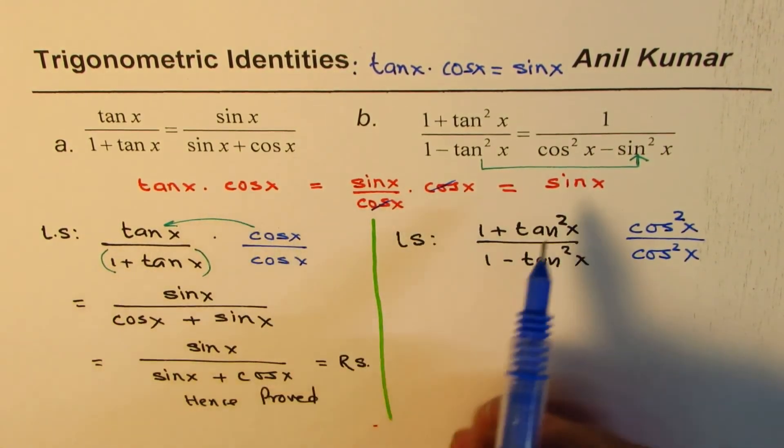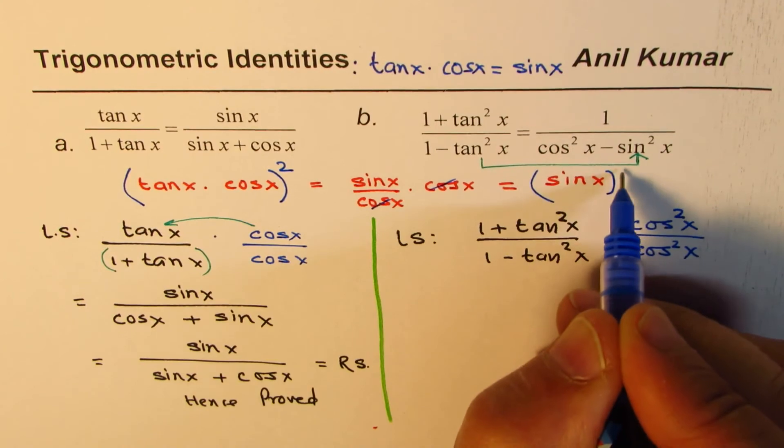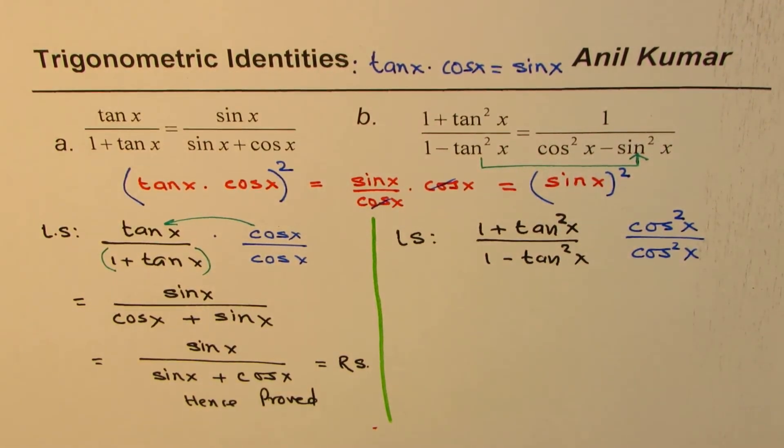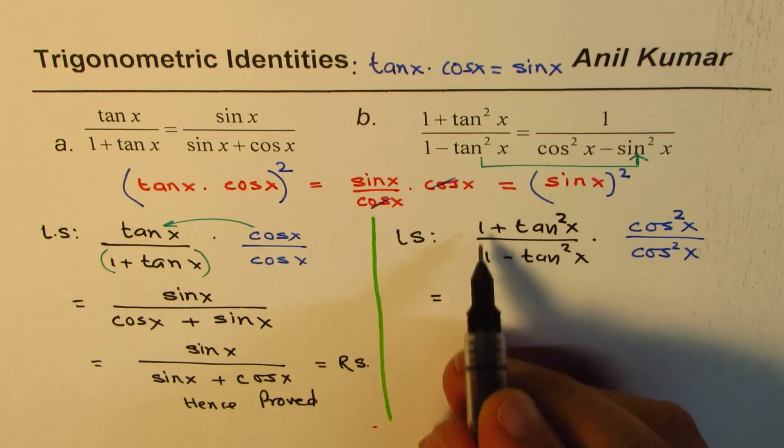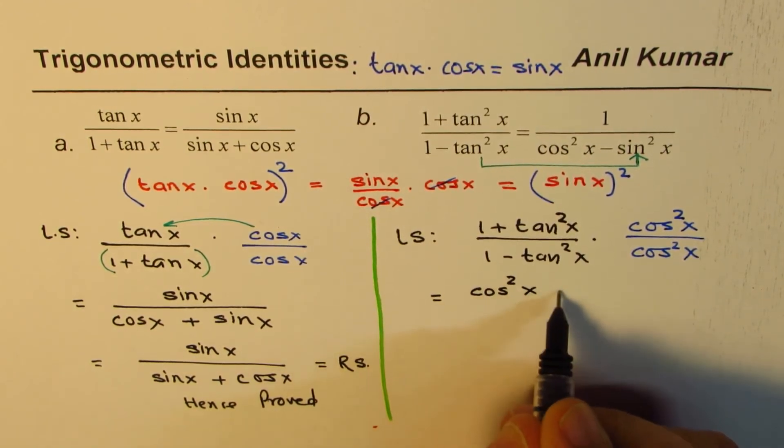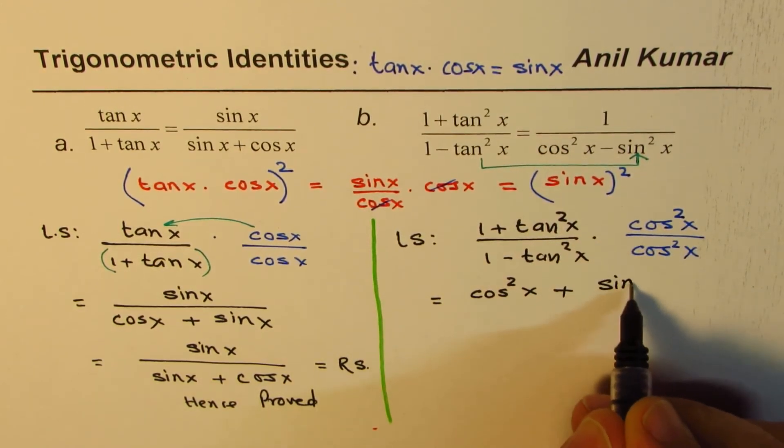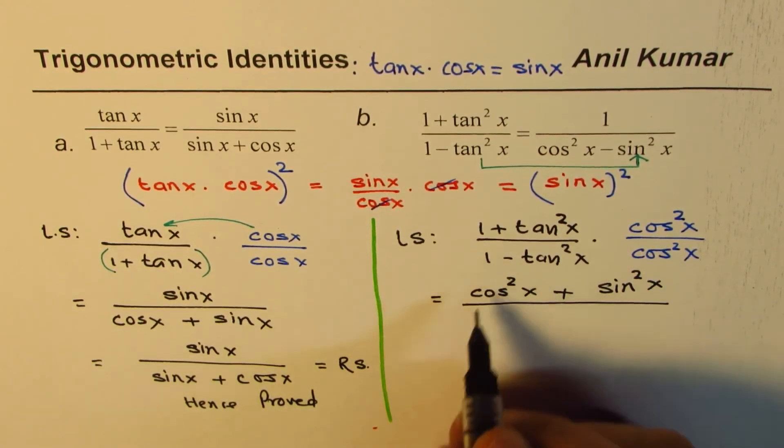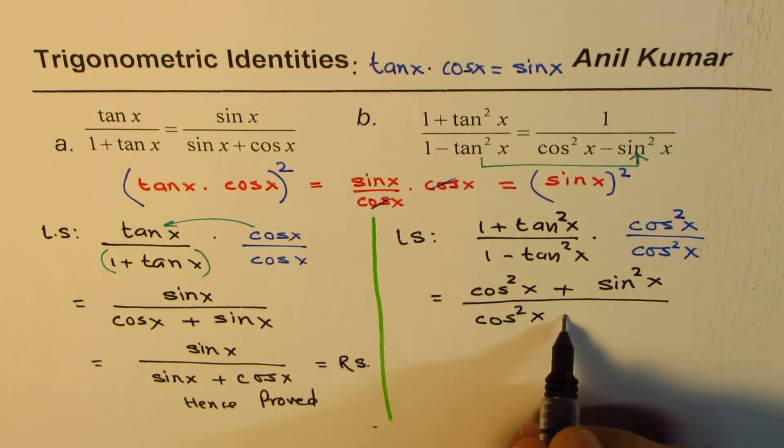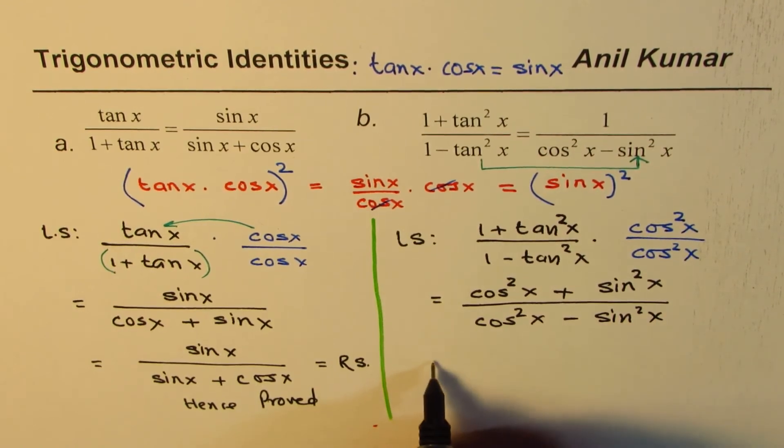Now, tan x times cos x is sin x, but if I square, then what? We get sin square x. That's the whole idea, right? That's what it is. So, let's do that. So, we can write the left side as cos square x times 1 is cos square x. Tan square x times cos square x is sin square x, right? No doubt about it. Divided by cos square x times 1 is cos square x minus tan square x times cos square x is sin square x.